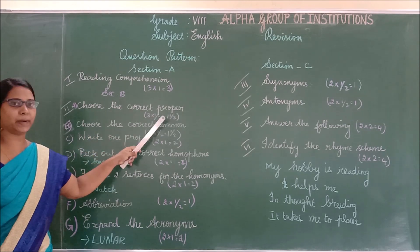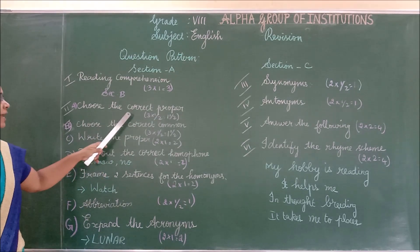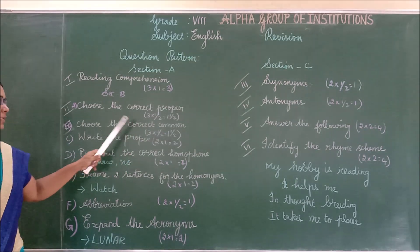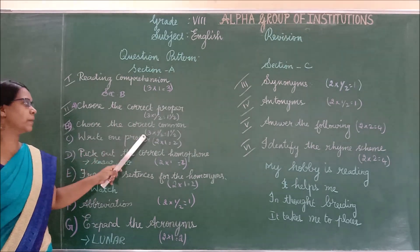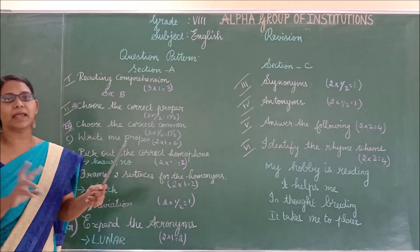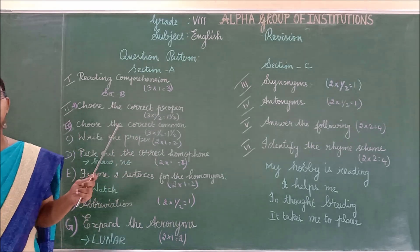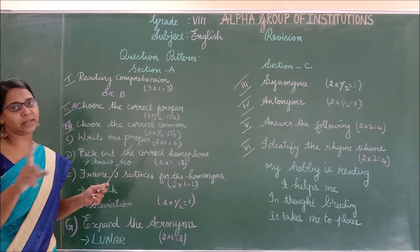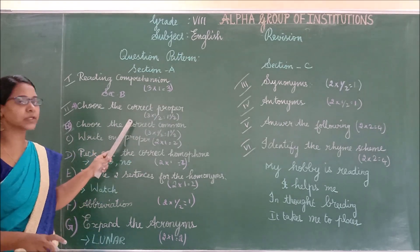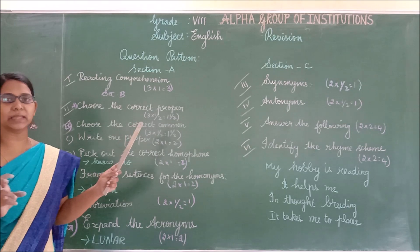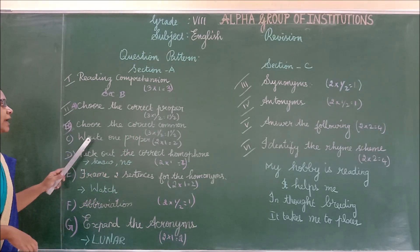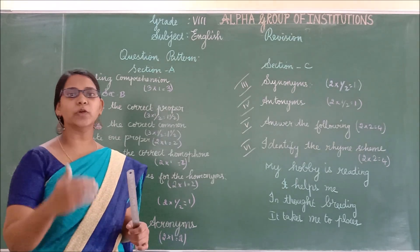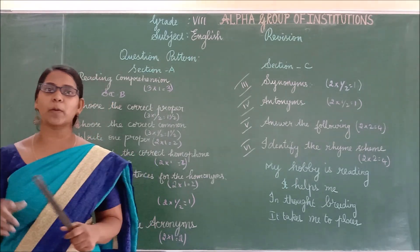Choose the correct proper noun. You will get 3 questions, each carrying half a mark, so overall one and a half marks. Choose the correct common noun. In the bracket, options will be given to you. Among them, you have to choose the correct proper noun or common noun based on the given sentence. Similarly, write one proper noun for the given common noun — they will give you a common noun and you have to write the proper noun.